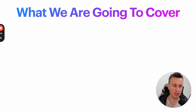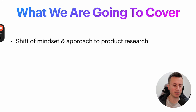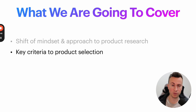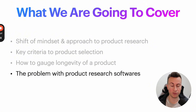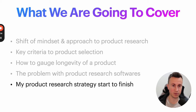Today I'm going to take you through a mini product research course. Number one is the shift of mindset and approach to product research — this is about the consumer's mindset, and it's crucially important. Number two, the key criteria to product selection, including a free checklist. Number three, how to gauge the longevity of a product, because we want to build a sustainable business and brand. Number four, the problem with product research softwares, and also my product research strategy from start to finish.